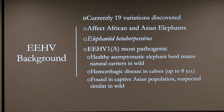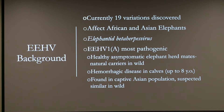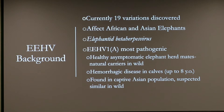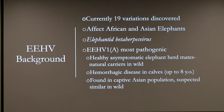EEHV1A is extremely pathogenic because it causes a hemorrhagic disease in calves, which are any young elephants up to eight years of age. It's found in captive Asian populations, but we also suspect that hemorrhagic diseases are affecting the wild, though it's hard to prove because of limited access to the bodies afterwards.